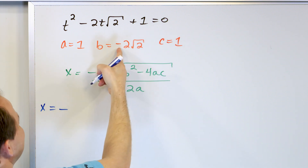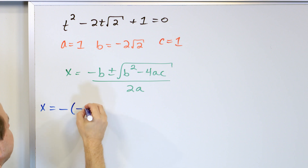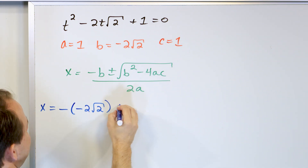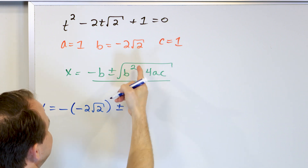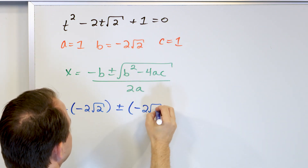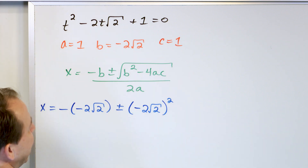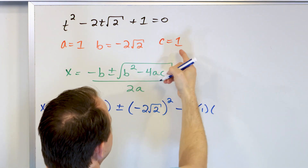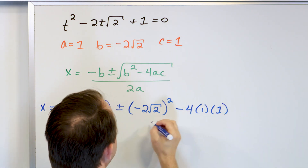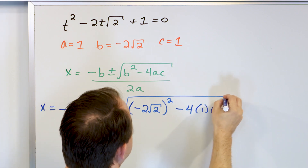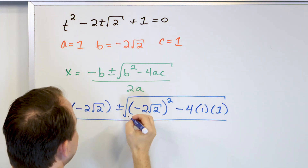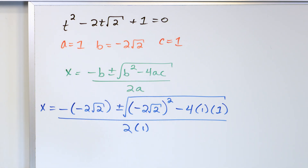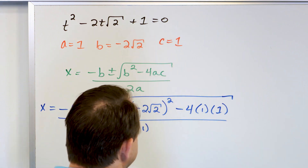Negative b, but b itself is a negative term, so I wrap it: negative 2 root 2 — that's what negative b is. Then plus or minus b squared, but b is this ugly negative thing, so I write negative 2 root 2, squared. Minus 4 times a, but a is 1, times c, but c is 1. This radical lives around all of this, and then this whole thing is over 2 times a, where a is 1. The radical extends all the way to the end.